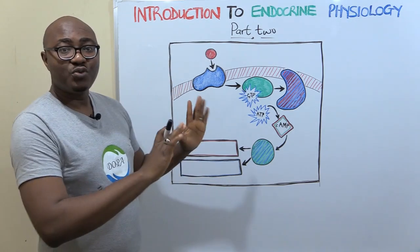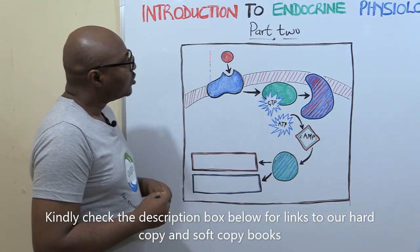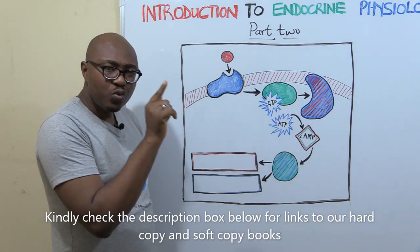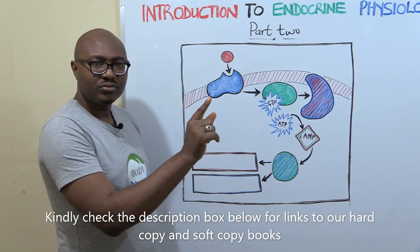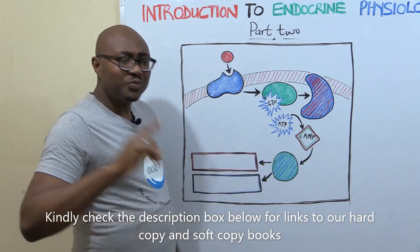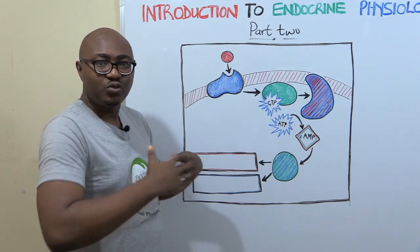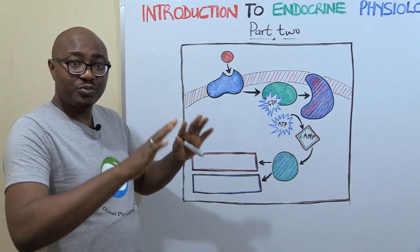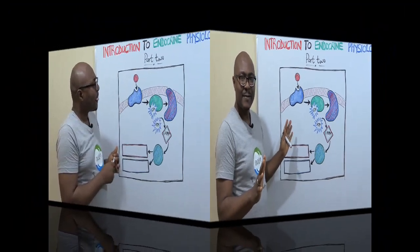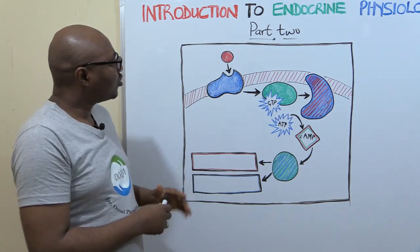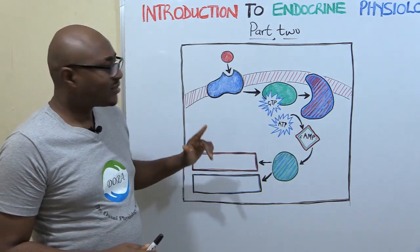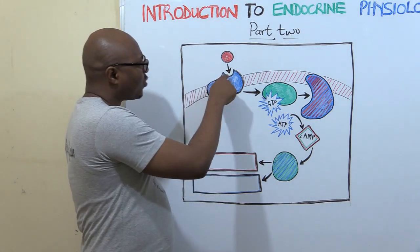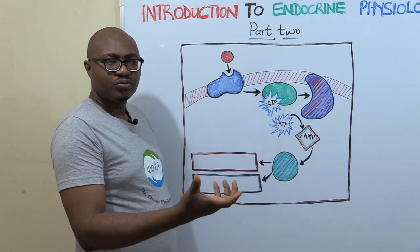This is part two of introduction to endocrine physiology. We're going a step further. Something very important is knowing how hormones produce physiological actions, because hormones are there to coordinate and elicit physiological responses. They help to integrate several physiological processes to make sure that there is homeostasis and balance. What we are going to be dealing with today is the mechanism of hormonal action: how does the binding of a hormone to its receptor lead to physiological responses?